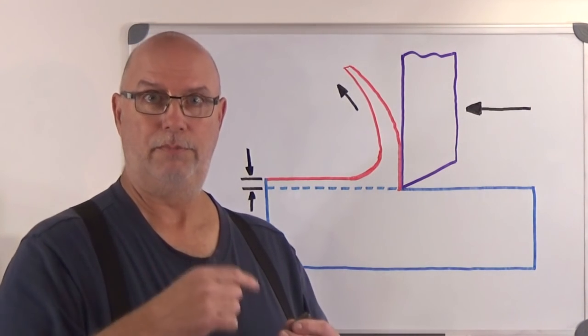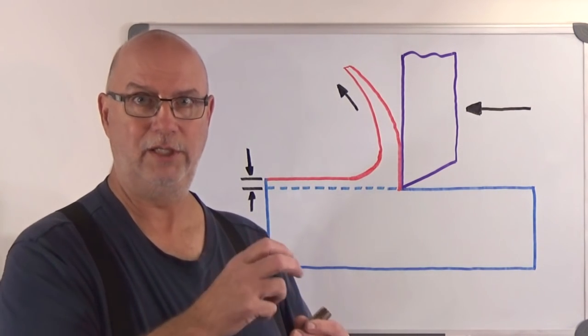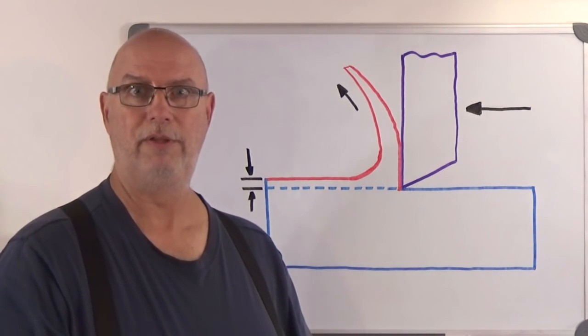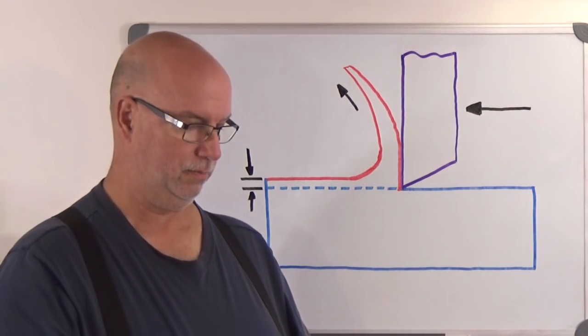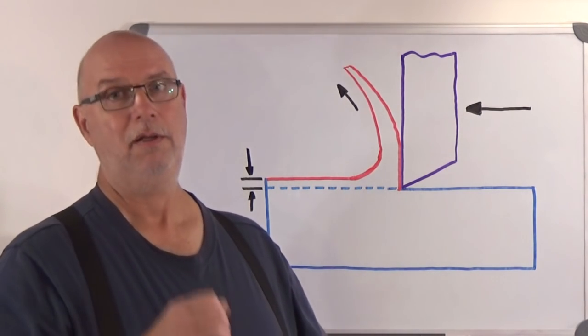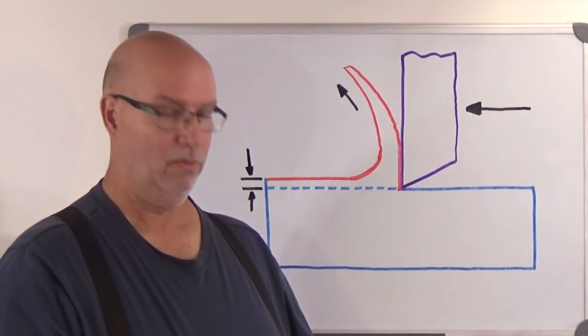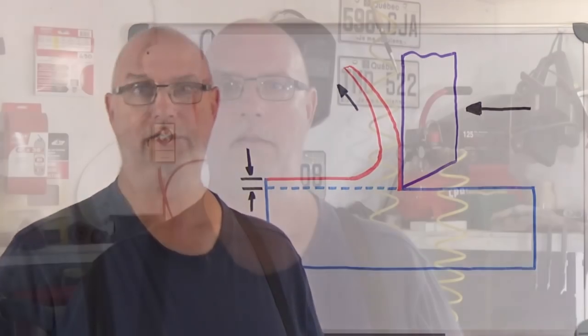But this problem does occur, the tap in the hole wedging problem does occur with reamers at a lesser amount. Because reamers do have back clearance. But if a reamer is worn, well, it will tend to want to wedge into its hole. So I hope that answers those questions.